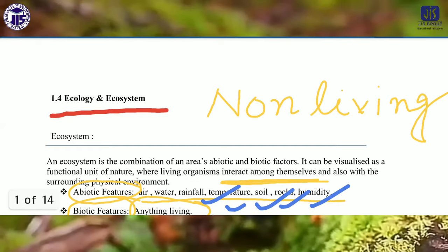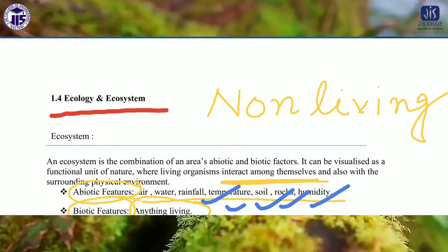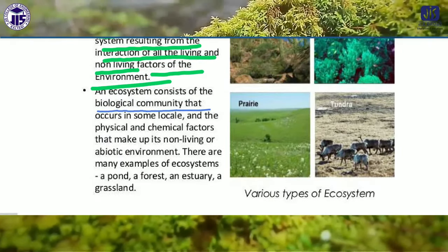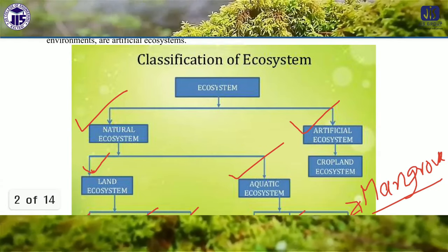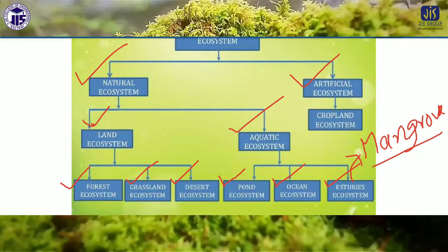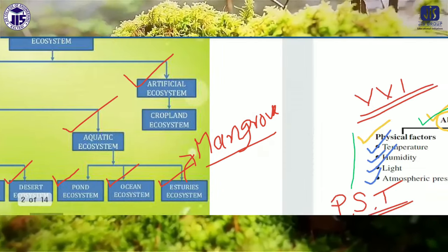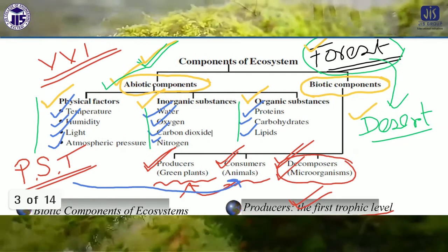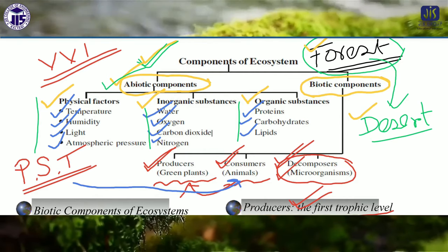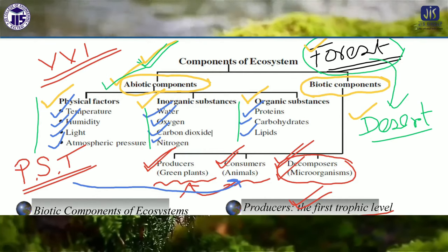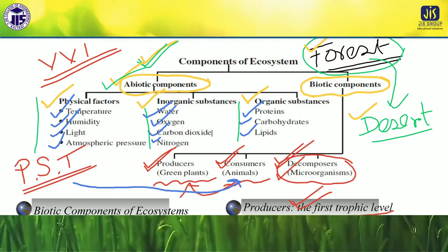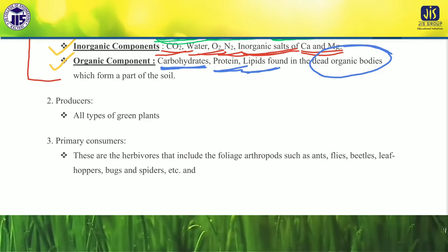As you know, in the previous class we discussed about the basic concept of the ecosystem — like ecology, what is ecology, ecosystem, and its specific components or types. There were the natural and artificial ecosystems. Then we discussed about the land ecosystem, meaning terrestrial ecosystem, and aquatic ecosystem. We discussed about the specific components of the ecosystem, and I told you that when we discuss each specific ecosystem, the components table is very important to keep in mind.